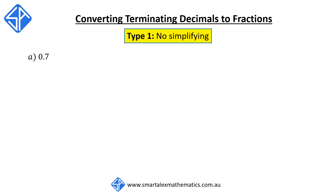Our first example is 0.7. Since there's one digit after the decimal point, we read this as 7 tenths, and as a fraction, this is 7 over 10. Note that we've got one digit after the decimal point, which corresponds to one zero after the one.